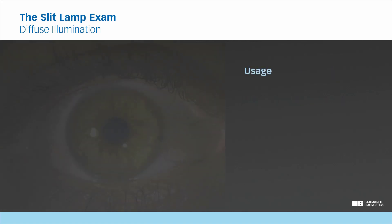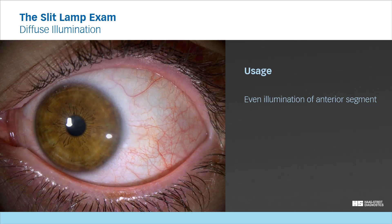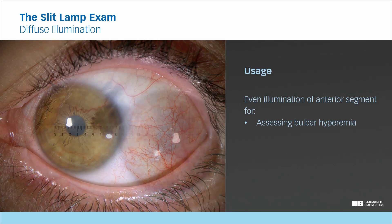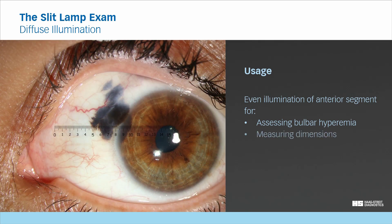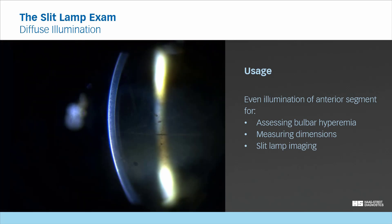Usage. Diffuse illumination is mainly used to achieve an evenly illuminated overview of the anterior segment and external eye. This is useful for assessing bulbar hyperemia or for providing even illumination when measuring dimensions with a dedicated measuring ocular. Furthermore, it is used in slit lamp imaging where the additional diffuse background illumination provides relevant clinical information to the still image. For comparison, here is the same image without diffuse background illumination.